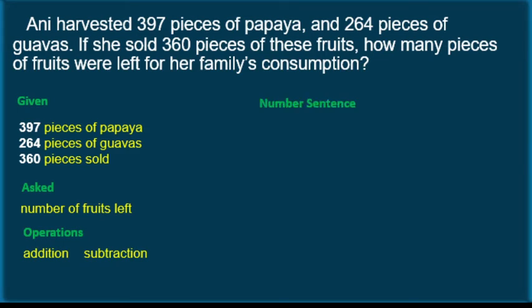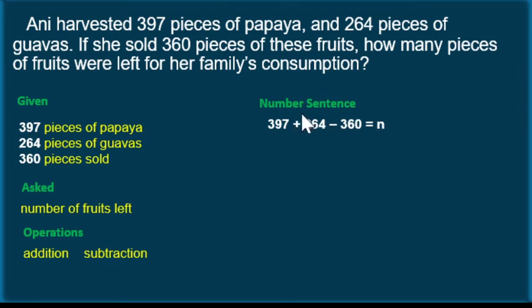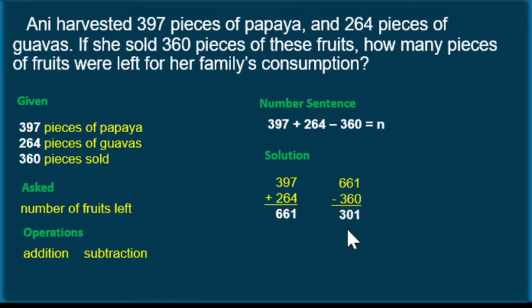The number sentence will be: 397 plus 264 minus 360 equals n. N stands for the missing number of fruits. This equation tells us to add first because addition comes before subtraction. We add the number of fruits harvested, then take away 360 pieces. From 661 we take away 360, so the answer is 301.